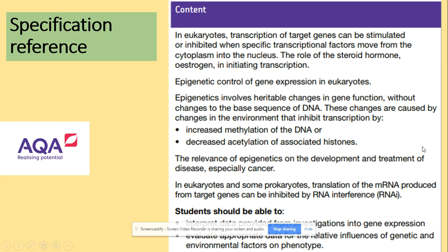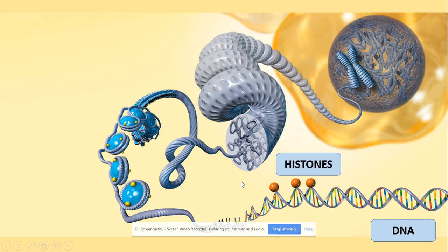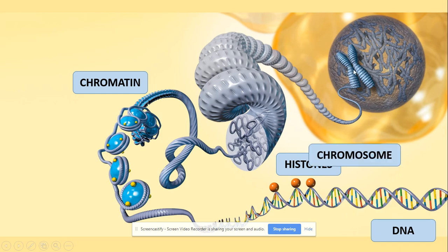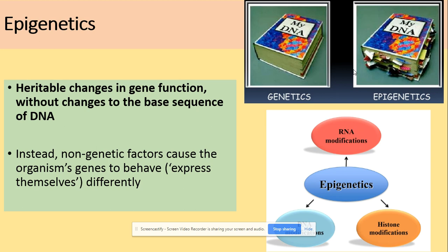We will be looking at the epigenetic control of gene expression in eukaryotic cells. First, we need to recap on the concept of DNA from Year 1 — how do we get from DNA to the chromosome? We've got a double helix DNA, which is associated with proteins called histones. The DNA and histones make a complex called chromatin, a more condensed form of DNA. The most condensed form is called a chromosome.